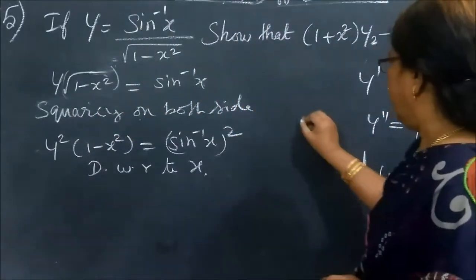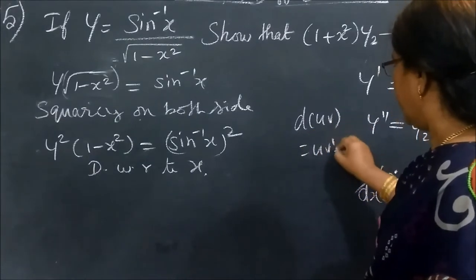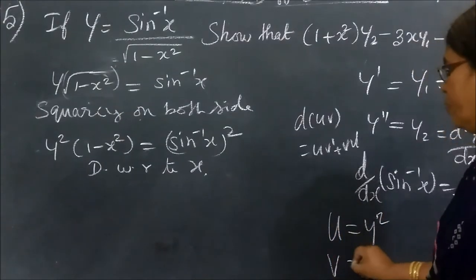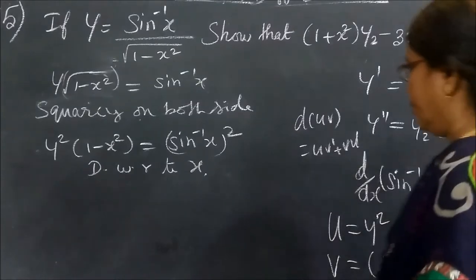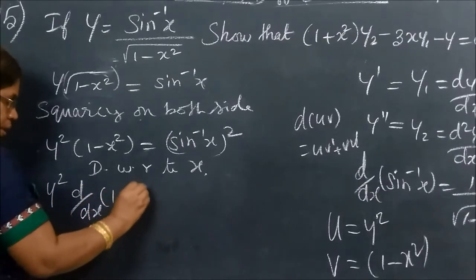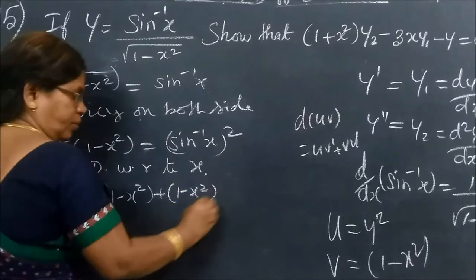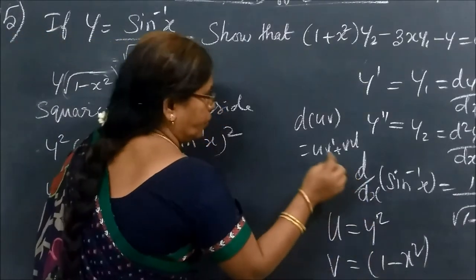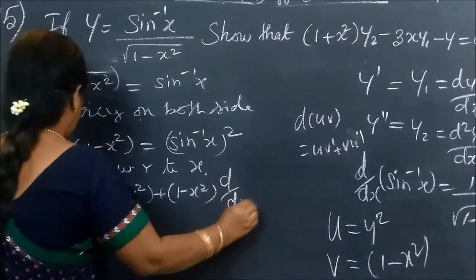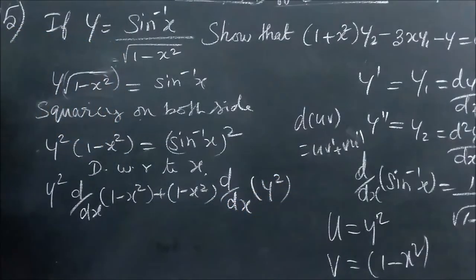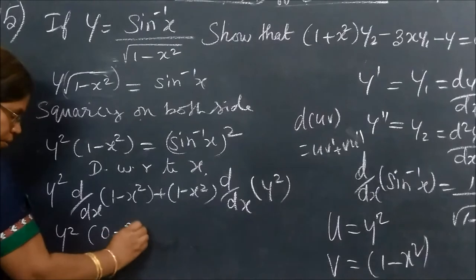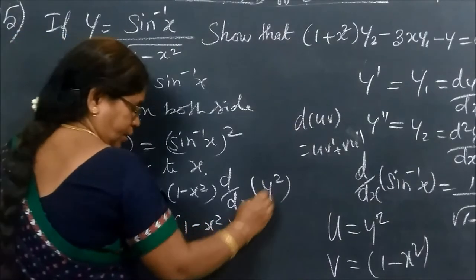We are using UV method. D of UV equals U·dV + V·dU. Here U is Y square and V is 1 minus X square. So Y square · dY/dX of (1 minus X square) plus (1 minus X square) applied here. Y square differentiation is 0 minus 2X.